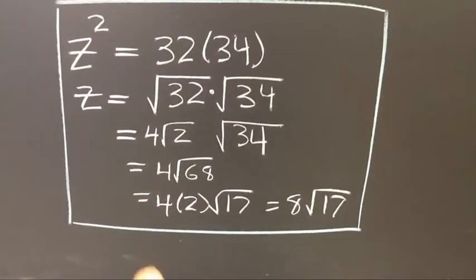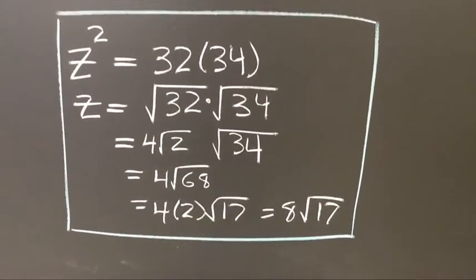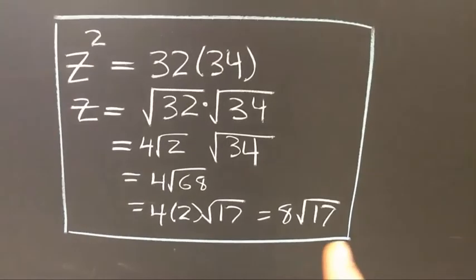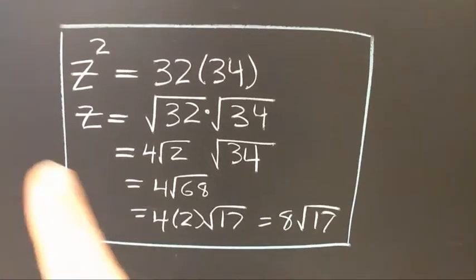So now this becomes 4 times 2 square roots of 17, which is 8 square roots of 17. And now I have z.